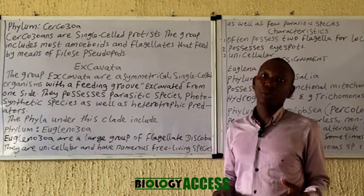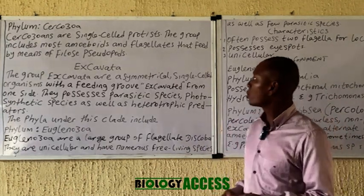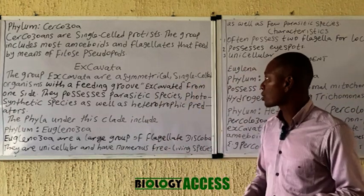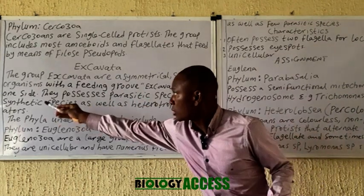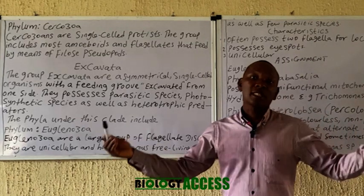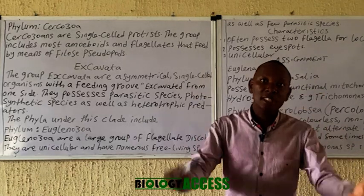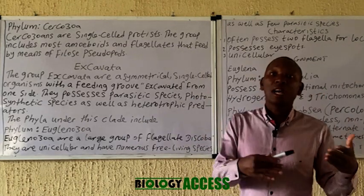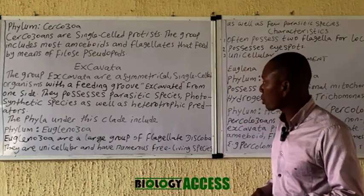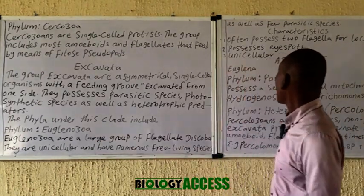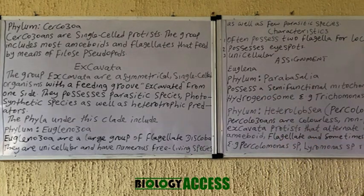The last clade is the Excavata — named from the term 'excavate' because they possess an oral groove that looks like an excavated place. These are asymmetrical single-celled protists that have a feeding groove excavated from one side. They have parasitic species, and they can also possess photosynthetic species, so they can be heterotrophic or autotrophic. The phyla in this group include the Euglenozoa, the Parabasalia, and the Heterolobosea.